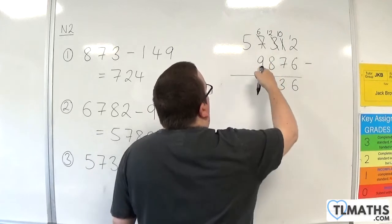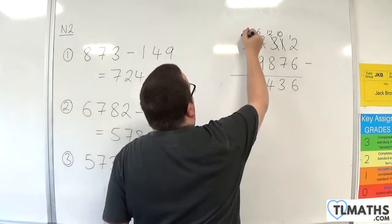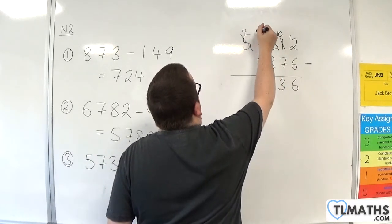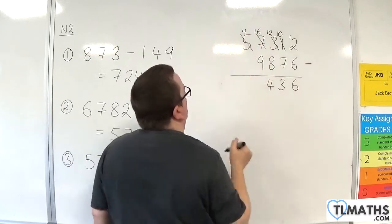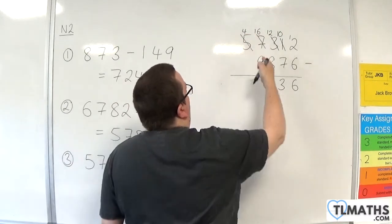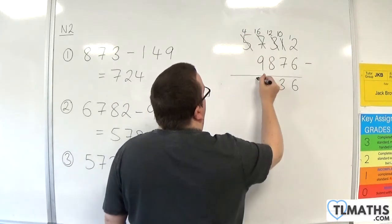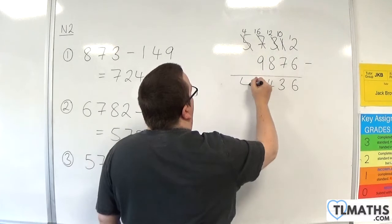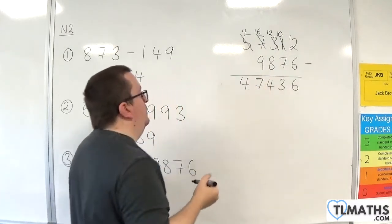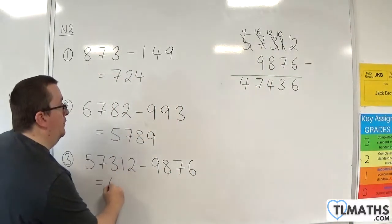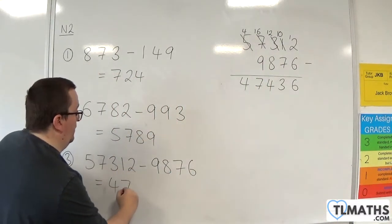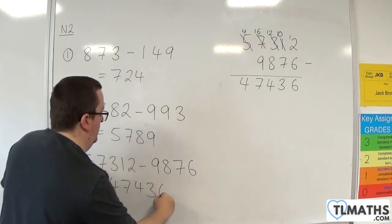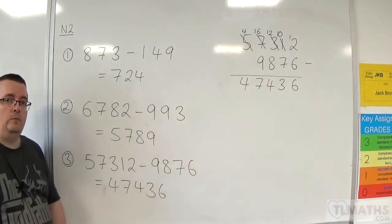6 take away 9 — I can't do, so I need to borrow 1 from the 5. It becomes 4, and the 6 becomes 16. 16 take away 9 is 7. And the 4 take away 0 is just 4. So we end up with 47,436 — so we end up with 47,436.